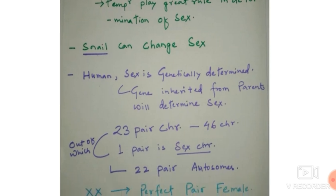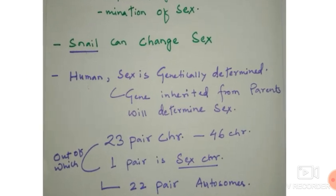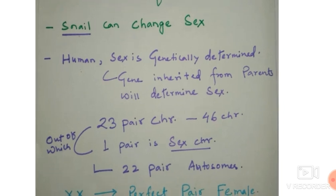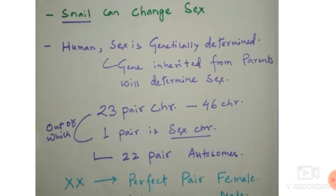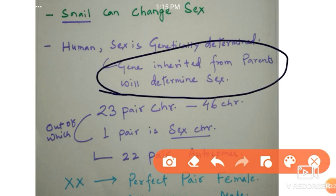In the case of humans, it is totally different. There is no dependence upon temperature and no changes in sex in human beings. In human beings, sex is genetically determined — from genes or chromosomes. The genes inherited from parents will determine sex. The genes inherited from our parents during sexual reproduction will determine our sex. This is a very important point.